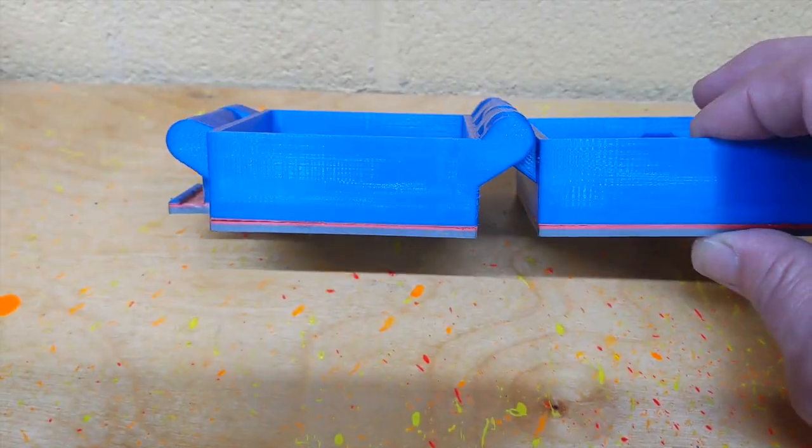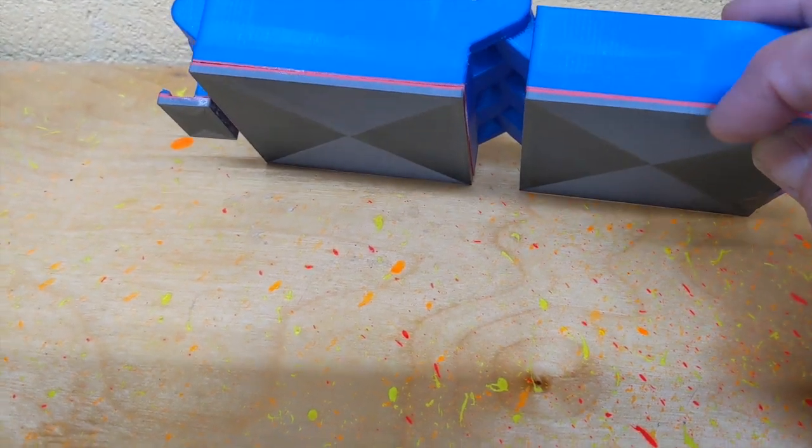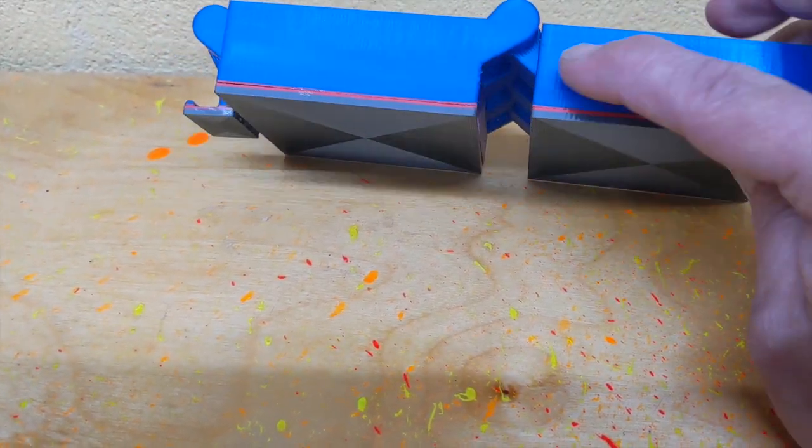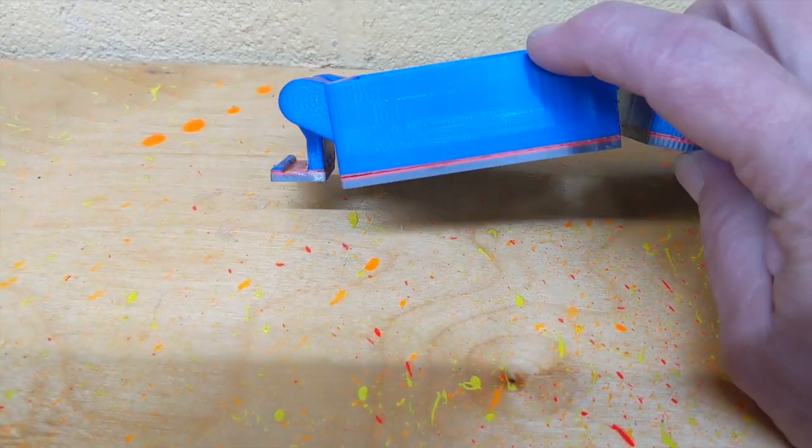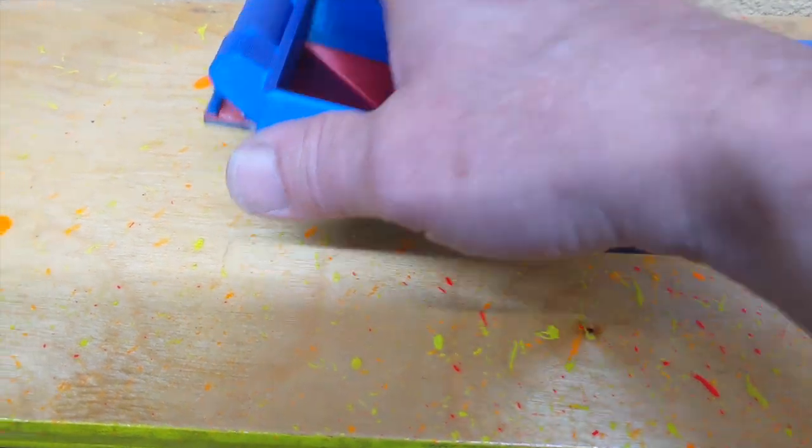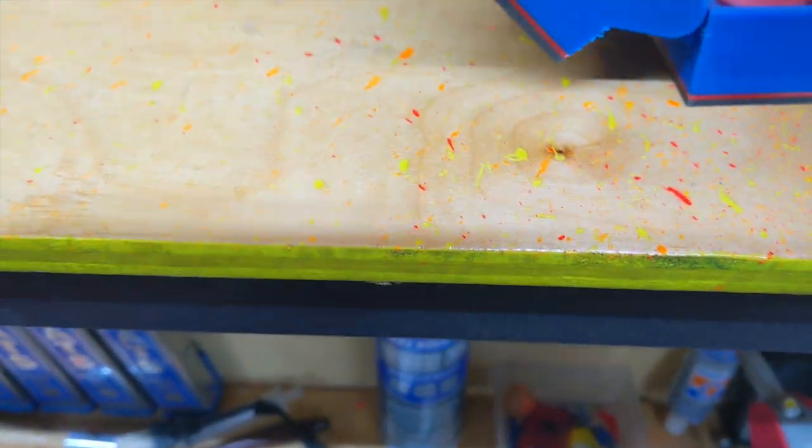So whenever I took it off the bed, this red part split on the top and the bottom. So I actually had to glue the top and the bottom back on before I dropped it and caused that piece to fall off.